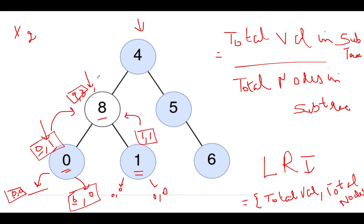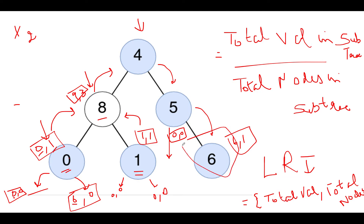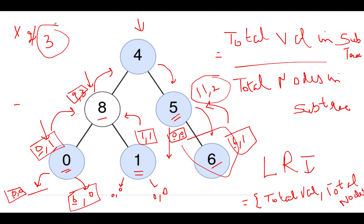Nine and three are returned to the parent node 4. We now traverse the right subtree. Node 5's left child is null, returning (0, 0). The right child of node 5 has value 6: total sum = 6, nodes = 1. Six divided by one equals six — the condition is met and the count updates to three, returning (6, 1) to node 5. At node 5: left gives zero, right gives six, current node is five — sum = eleven, nodes = two. Eleven divided by two equals five, which matches the node value, so the count updates to four, and (11, 2) is returned.